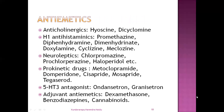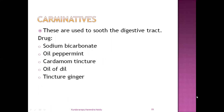Next: anti-emetics, which prevent vomiting. They are classified as: anticholinergics — hyoscine and dicyclomine; H1 antihistaminics — promethazine, diphenhydramine, dimenhydrinate, doxylamine, cyclizine, and meclozine; neuroleptic drugs — chlorpromazine, prochlorperazine, haloperidol, etc.; prokinetic drugs — metoclopramide, domperidone, cisapride, mosapride, and itopride; 5-HT3 antagonists (5-hydroxytryptamine antagonists) — ondansetron and granisetron; and adjuvant anti-emetics — dexamethasone, benzodiazepines, and cannabinoids.